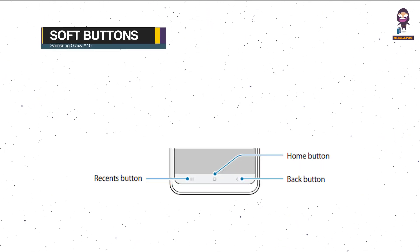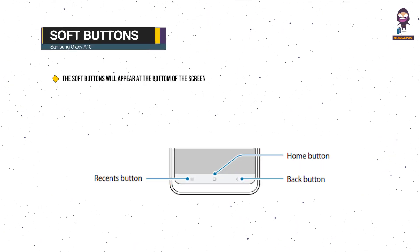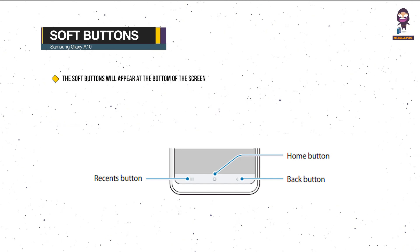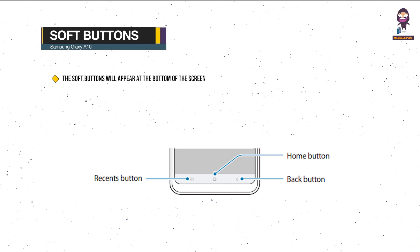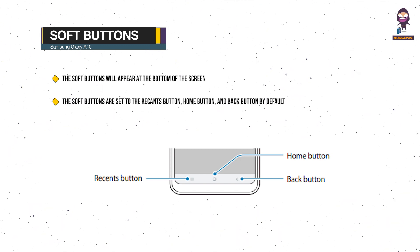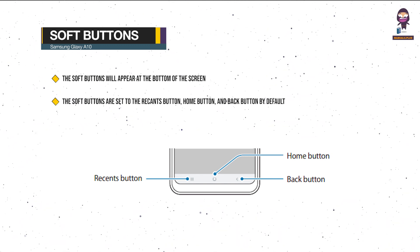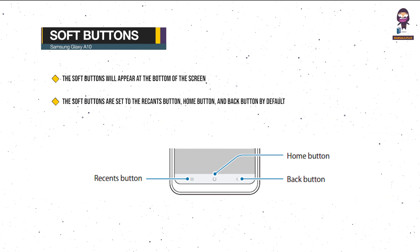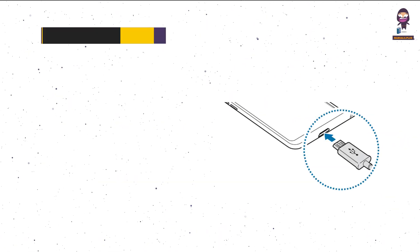When you turn on the screen, the soft buttons will appear at the bottom of the screen. The soft buttons are set to the Recent button, Home button, and Back button by default.